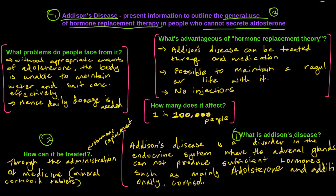There are some advantages of this hormone replacement therapy. Firstly, Addison's disease can be treated through oral medication, which is really good — it doesn't need an entire operation or drastic changes to the body. It is possible to treat and maintain it while living a regular life without changing your entire lifestyle. And also there are no injections, which is a nice upside. Anyway, I hope this short video summed up what Addison's disease is, how we treat it, and a few advantages of the treatment. Thanks for watching.